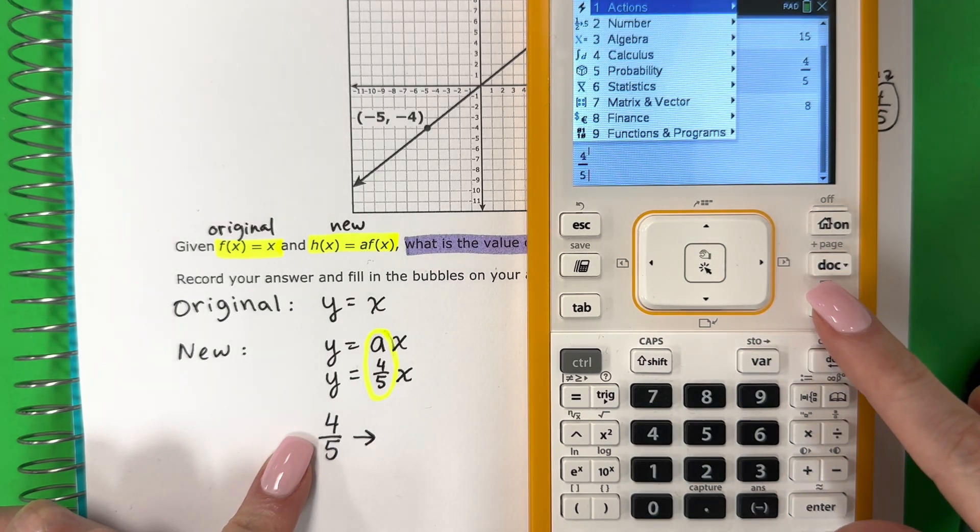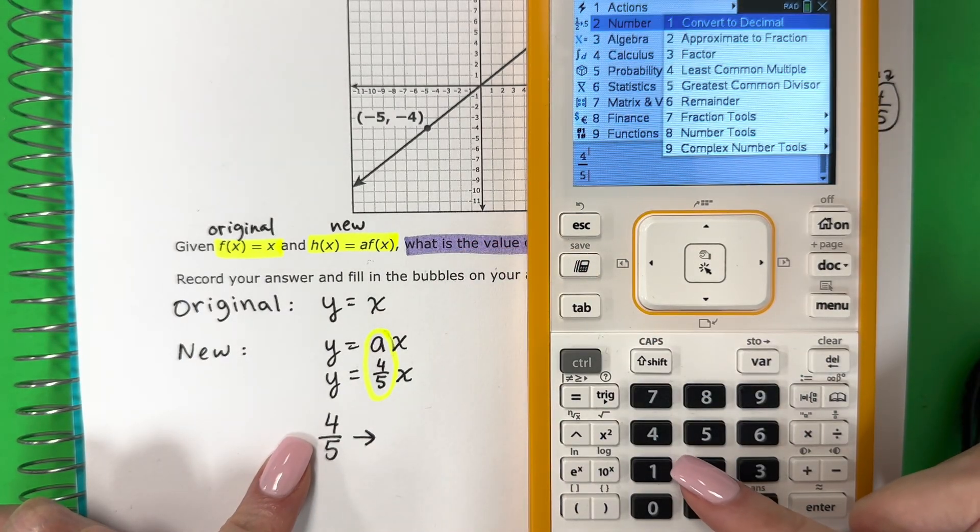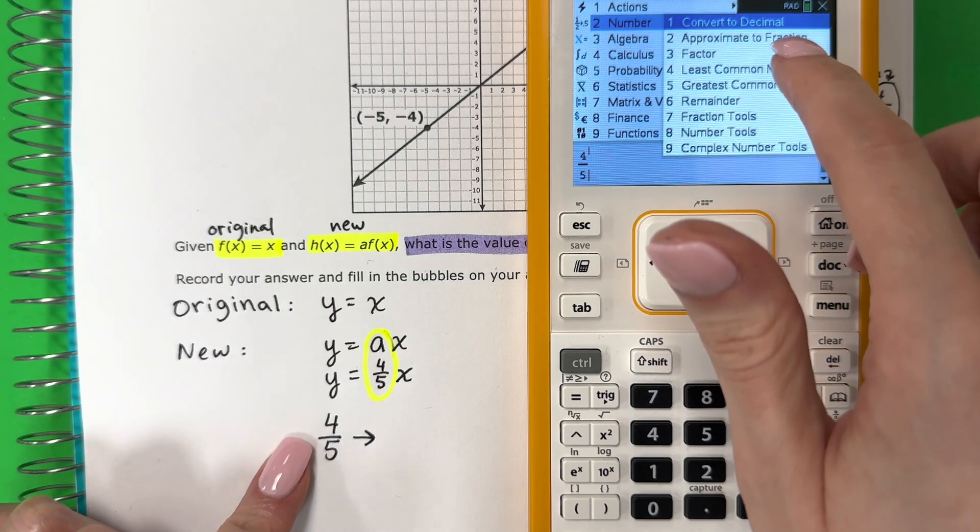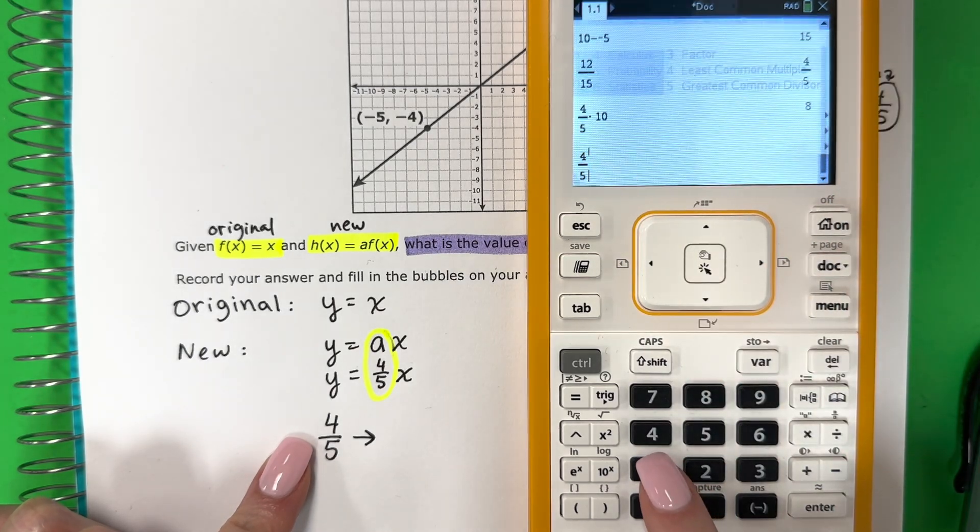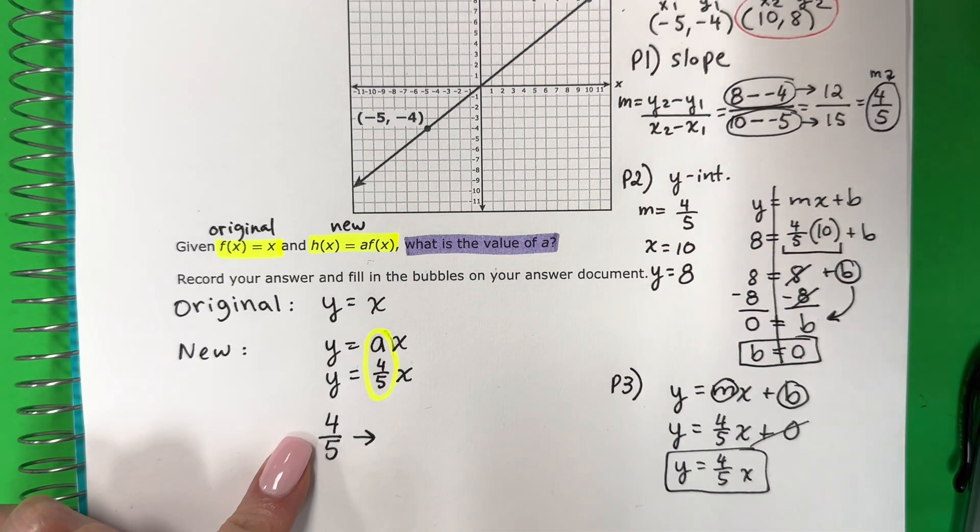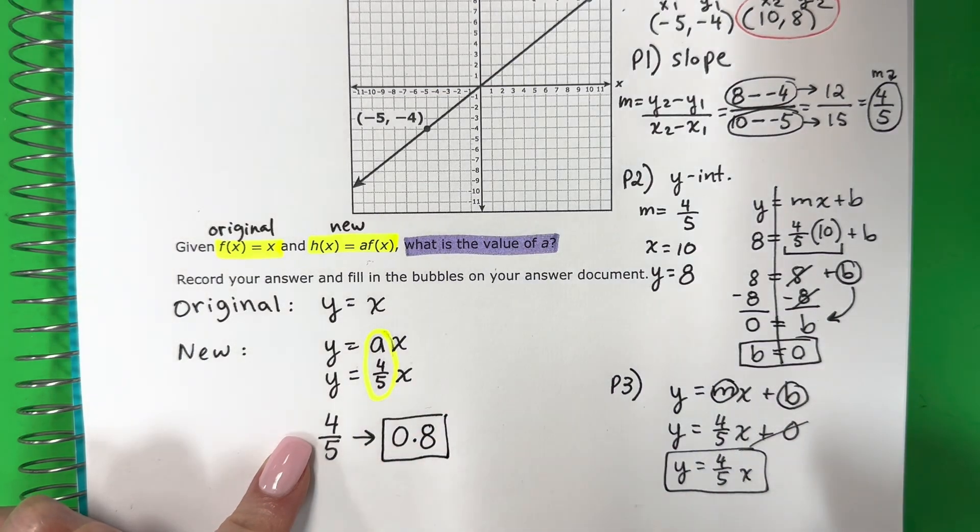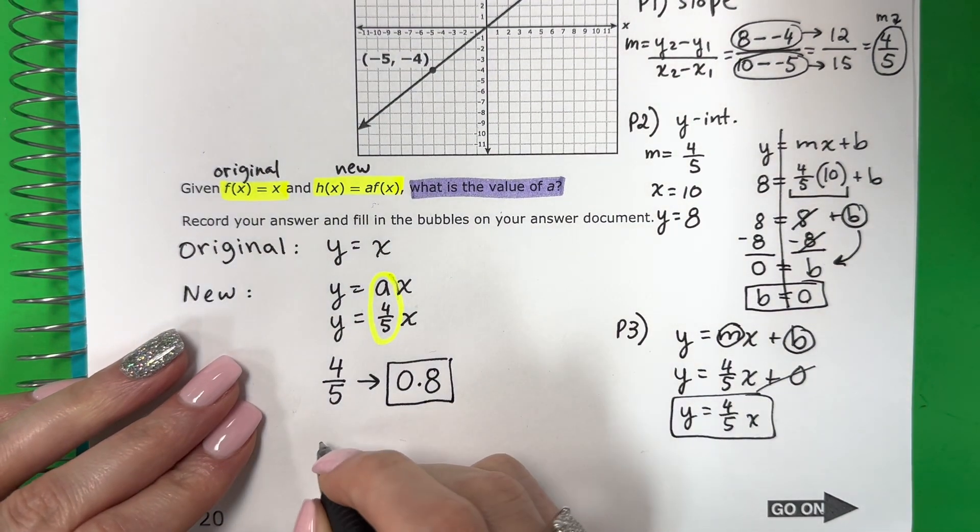We're going to push menu. I want to change the number. Quiero cambiar el número. Which is number two. Es la dos. So, two. I want decimal. Quiero decimal. Which is one. Uno. Push enter. Zero point eight. This is my answer. Esta es mi respuesta.